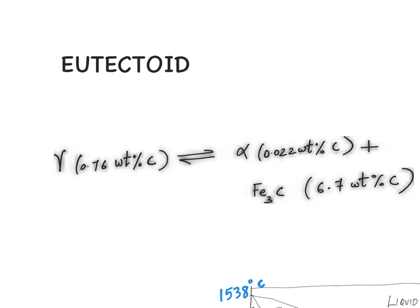This course will focus on iron-carbon alloys. Although the concepts explained here can be extended to any other alloy, iron-carbon alloys are of significant interest in engineering. We will be restricting our study to microstructure development in an iron-carbon alloy of eutectoid composition.